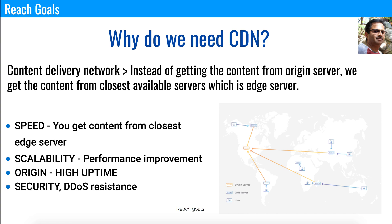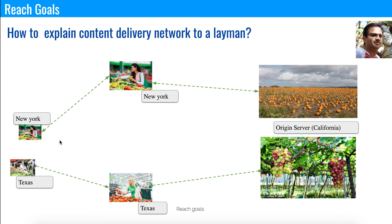The fourth benefit is security or DDoS resistance. If all traffic is hitting your origin server directly, there is a high possibility of a security risk — a DDoS attack could take it down. Instead, if content is served from edge servers and traffic to the origin is reduced, there is less security risk. You can also implement security policies and filter security concerns at the edge server level.